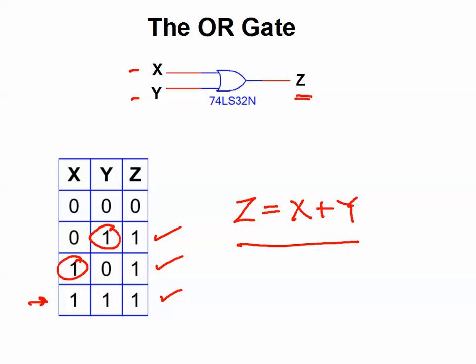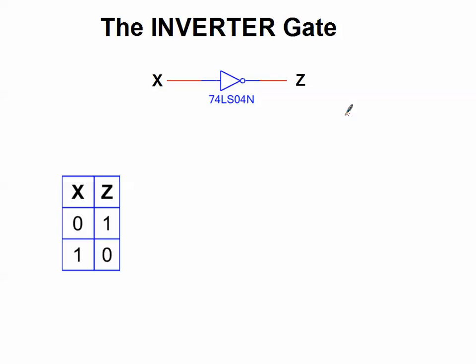So moving on to our third type of gate in AOI logic, we have our inverter gate. Notice the inverter gate only has one input and one output, so the truth table only has one input. The possible combinations are 0 and 1. But notice what happens is, Z is the opposite, or the inverse, of the input.